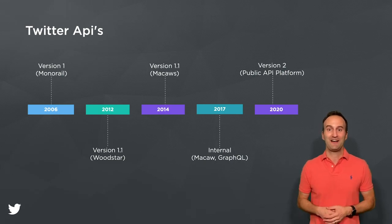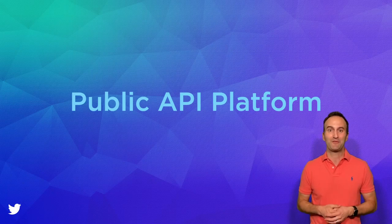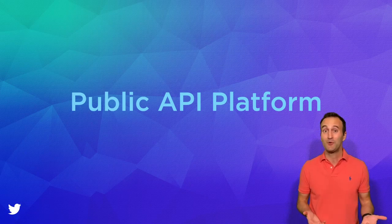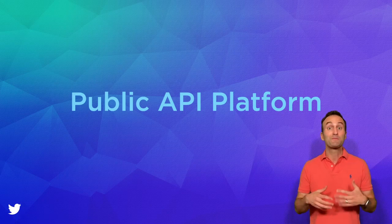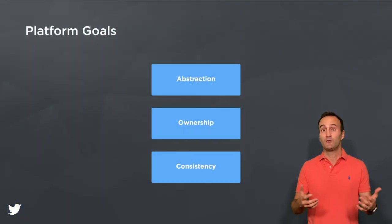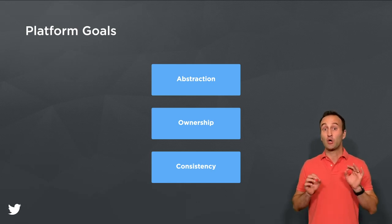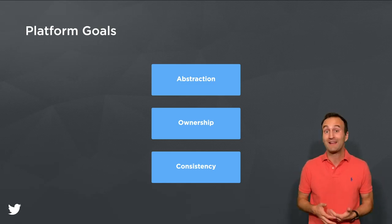With that brief history behind us, let's now look at the goals and architecture behind our new public API platform. For our new platform, we knew we needed a new architecture that can more easily scale with the large number of API endpoints needed to serve current and future functionality. Our abstraction goal is to enable Twitter engineers to focus on querying and mutating only the data they care about without needing to worry about the infrastructure and operations of running a production HTTP service.